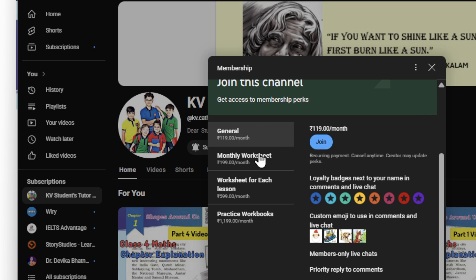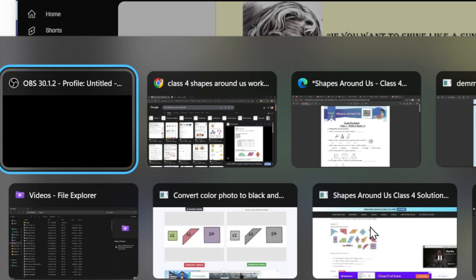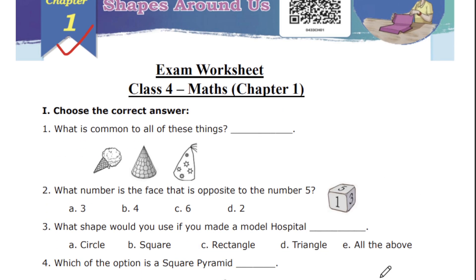If you need only this worksheet for class 4 mathematics, you can click join. If you need all the worksheets, you can select monthly worksheet and give join. Ask your parents to do it. You have to pay. There is an option to pay through GPay also. Now we'll go back to the worksheet.